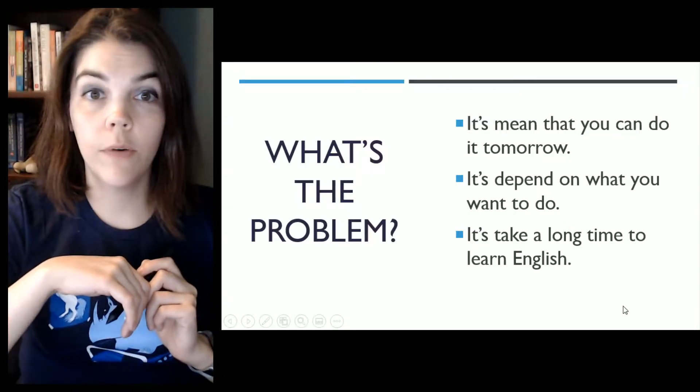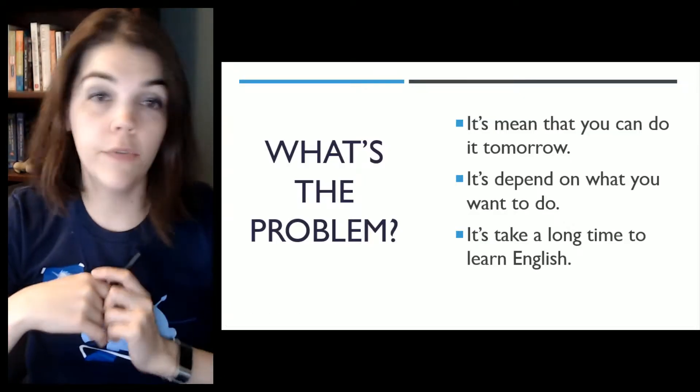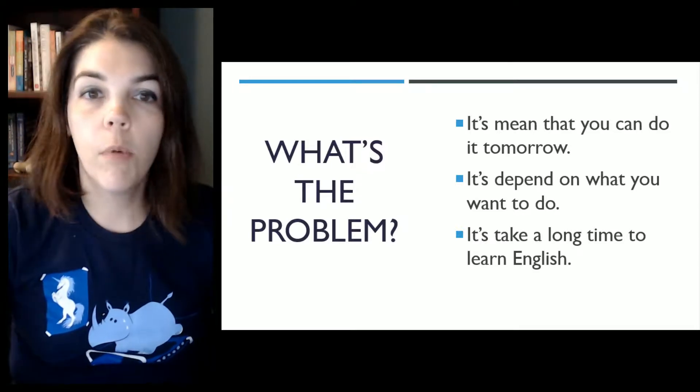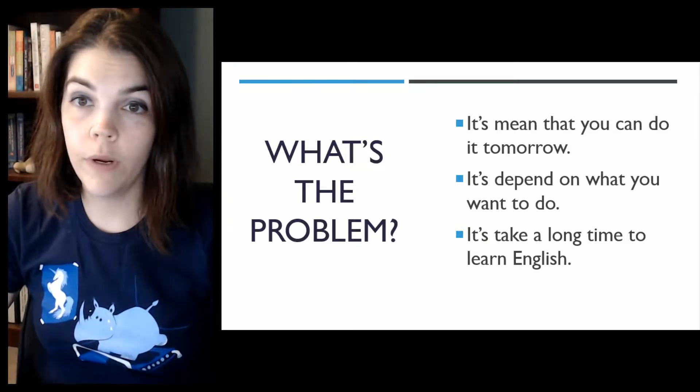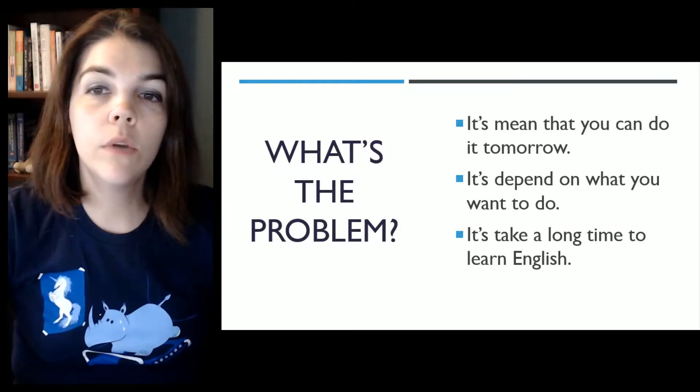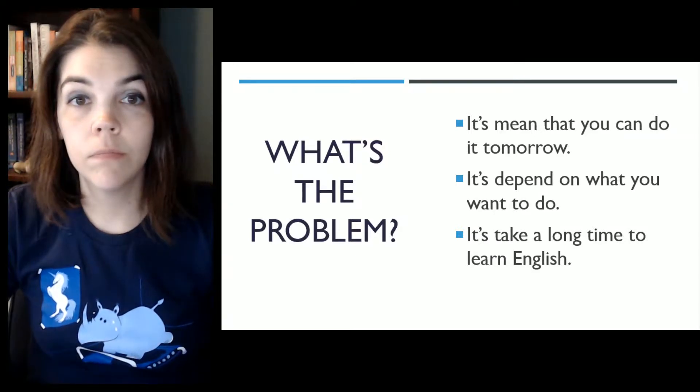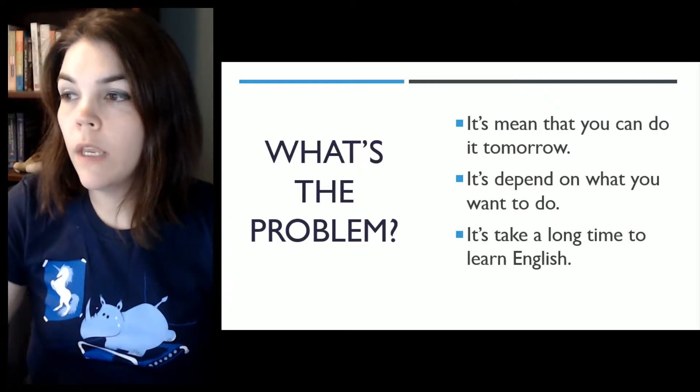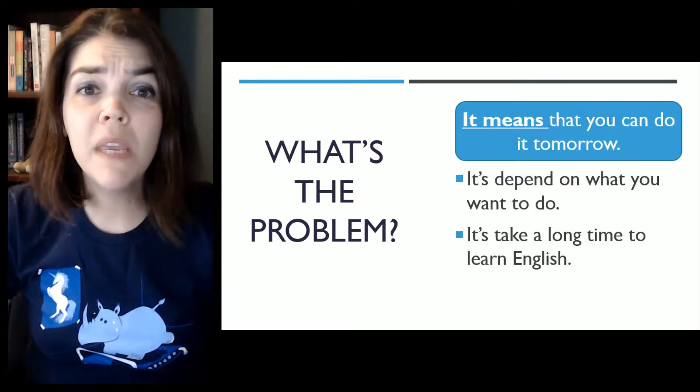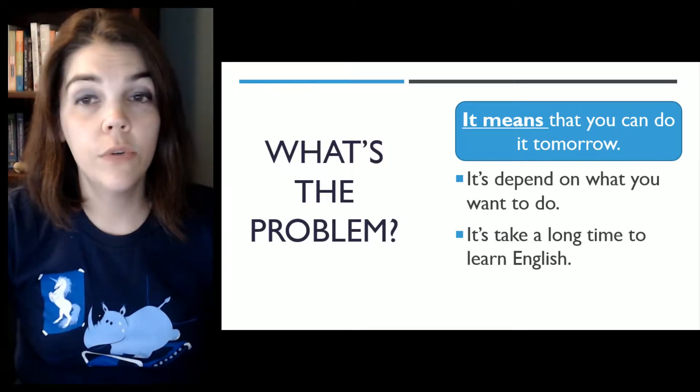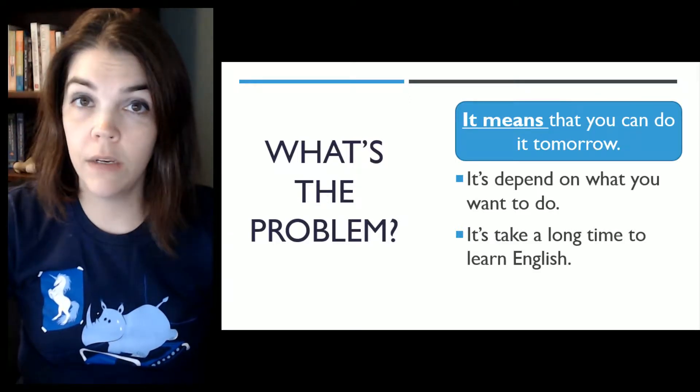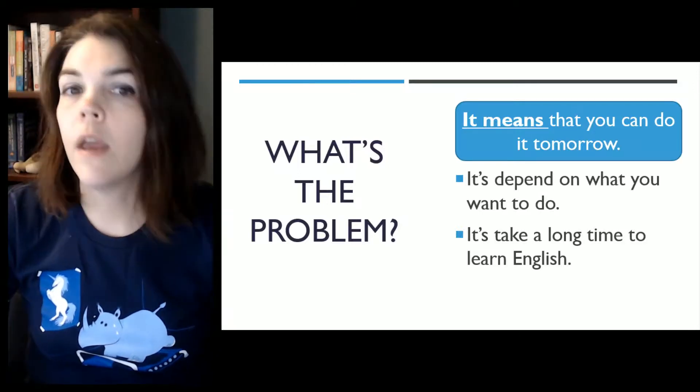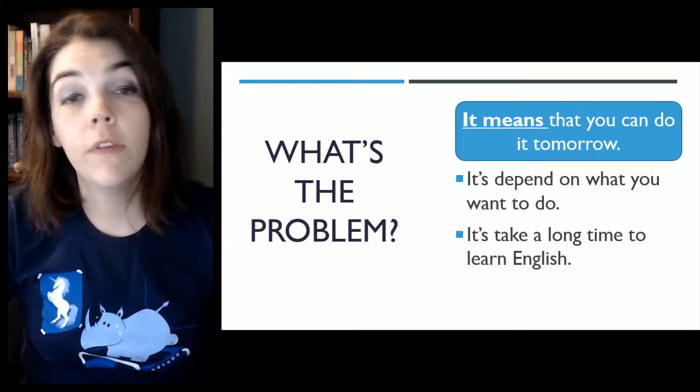Alright, so here are three different sentences. Take a look and see if you can figure out the problem. So the first one, it's mean that you can do it tomorrow. Any idea? It should be, it means that you can do it tomorrow. Not it's mean, but it means. So thinking about that, can you figure out what the problem is with the second one?